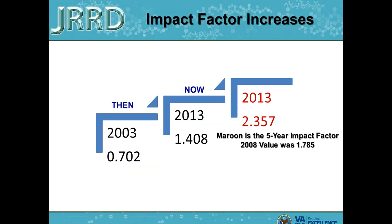Likewise, the impact factor has also doubled. In 2003 we were 0.7; in 2013 we're 1.4. The five-year impact factor, the first year accessible through the JCR, was 1.785; this year it was 2.357. Many years ago in 2008, our website was offline for a year, and that year off is still affecting slightly our five-year impact factor, although it no longer affects our two-year impact factor. The impact factor is steadily increasing, and to answer your question Ron, it's hard to know exactly the contribution of international versus national, but you will see from the next slides that this is affecting our citations.